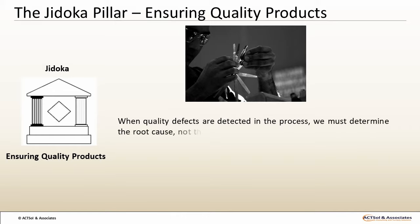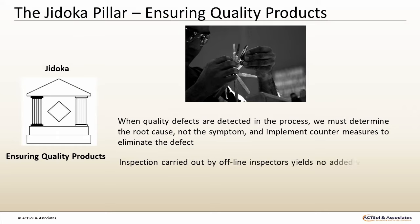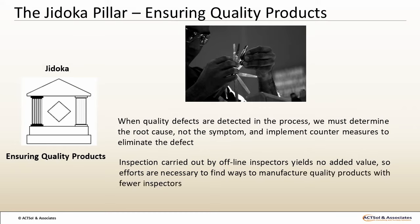We must determine the root cause, not the symptom, and implement countermeasures to eliminate the defect. The stronger the determination not to let defective products out of the plant, the more stringent inspections become, and the more often corrective adjustments and repairs are made. Inspection carried out by offline inspectors yields no added value. So, efforts are necessary to find ways to manufacture quality products with fewer inspectors. In other words, we must build quality into the product. Introducing a device into the process that can determine if a wiring harness is mistakenly wired and alert the operator is an example of building quality into the product.